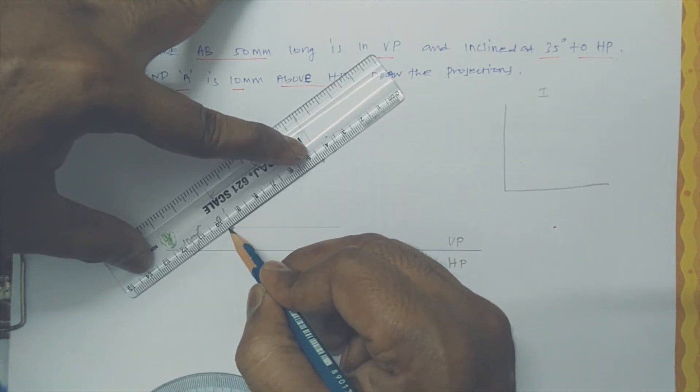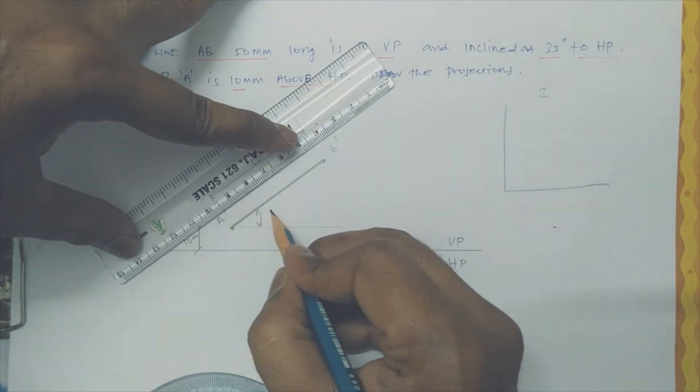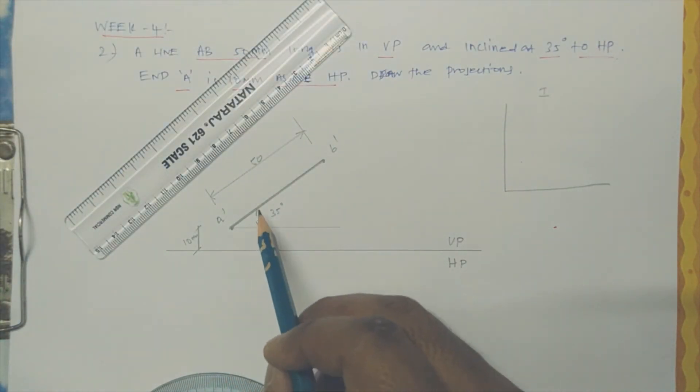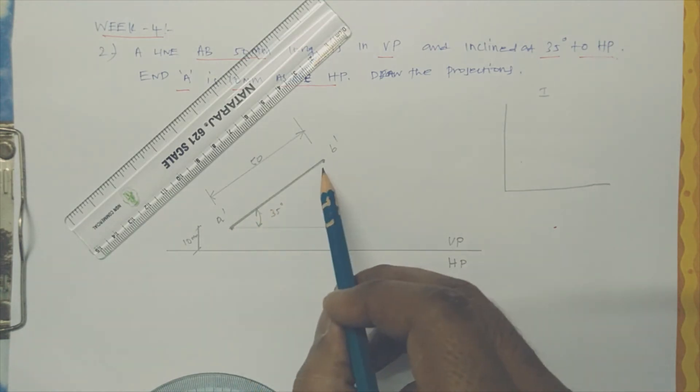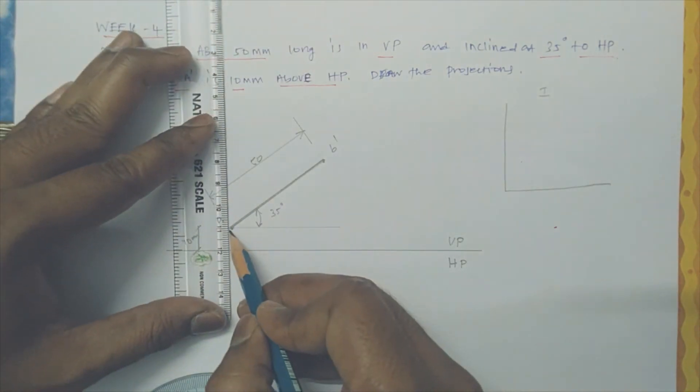This line we can show, this is 35-degree angular line. The line which is in the vertical plane, plane of projection, we show as A dash to B dash. Similarly, when you are seeing from the top, as I said, it's on the reference line.